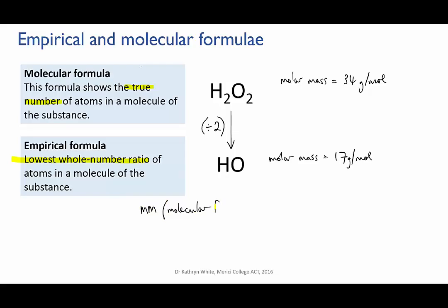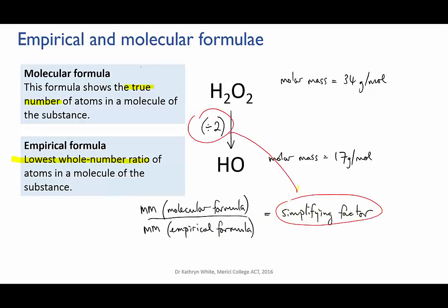This means that the molar mass of the empirical formula is half that of the true molar mass. Hence, if you divide the true molar mass by the molar mass of the empirical formula, you'll rediscover the factor that was used to simplify the molecular formula.